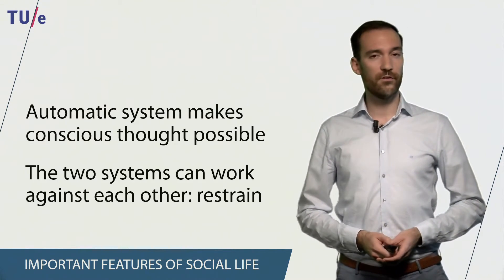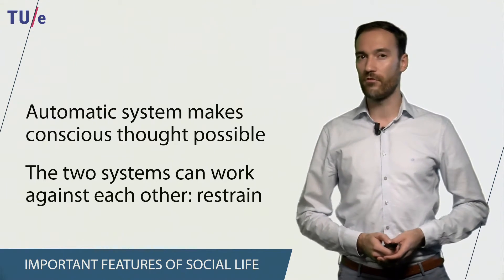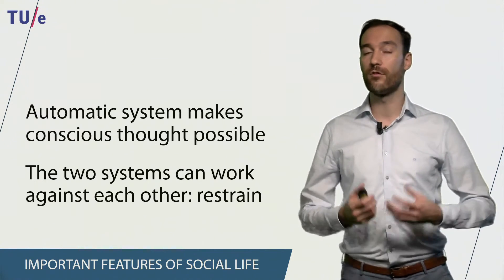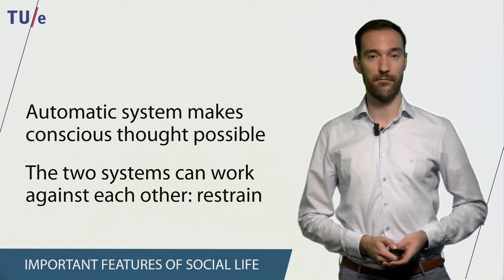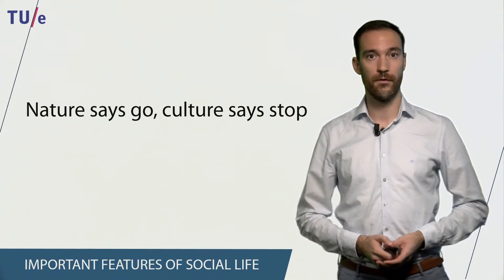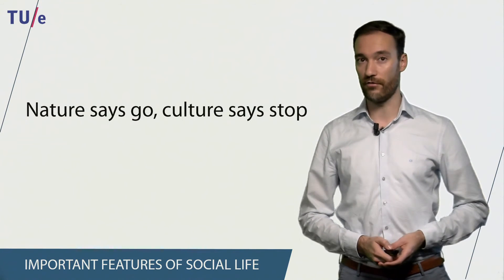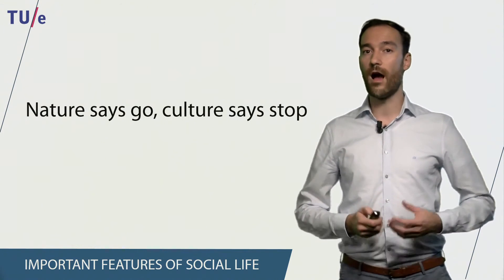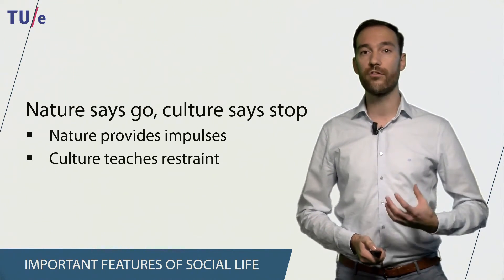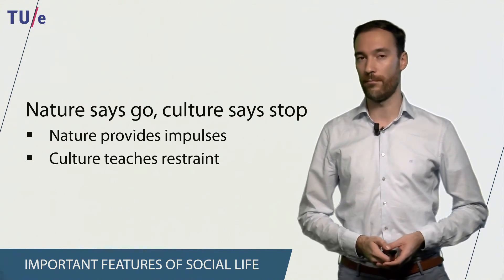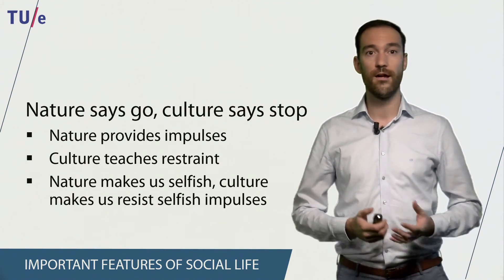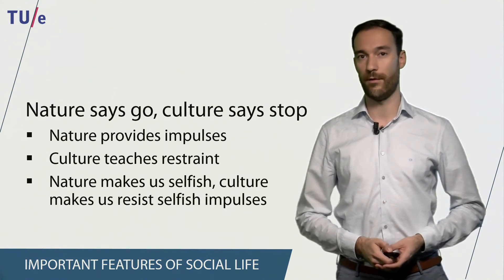The automatic and deliberate system do not always help each other — sometimes they can actually work against one another. In this case, we have to restrain ourselves from performing a certain behavior. And this brings us to the most important statement of this chapter: nature says go, culture says stop. Essentially, nature provides all kinds of impulses, and culture teaches us to restrain ourselves from those impulses. In a way, nature makes us selfish, and culture makes us resist those selfish impulses.